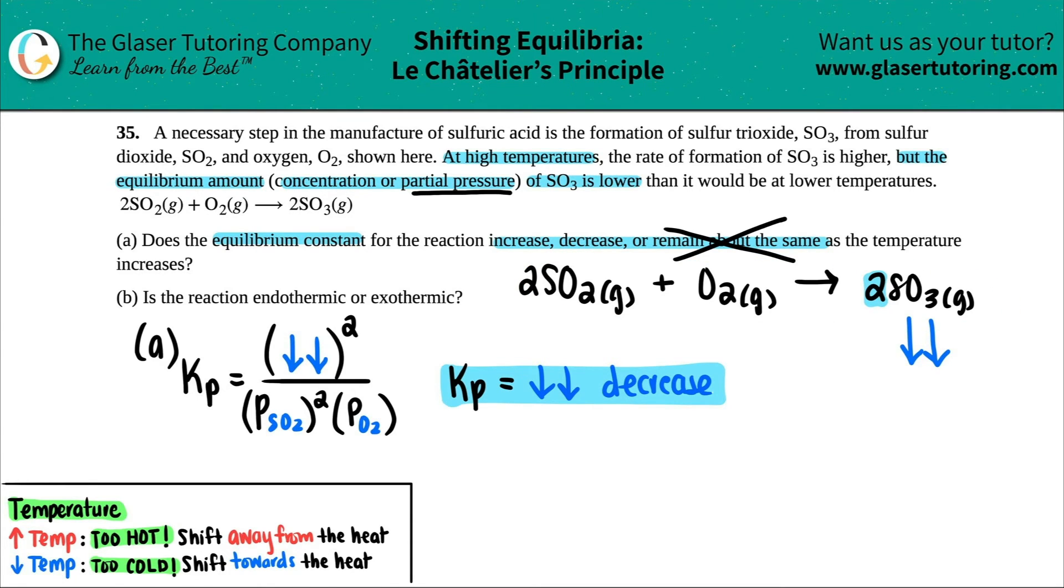So here comes Le Chatelier's principle. Now they did say that the temperature increased. We know that we're losing SO3. So let's keep with the idea of having that high temp. So here comes the consensus. If you increase your temperature, high temperatures, if you increase the temperature, it's way too hot. Think about on a really hot day. Me personally, I would much rather be in the AC. It's way too hot, so I need to go away from the heat.